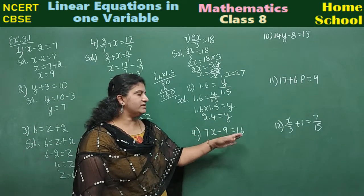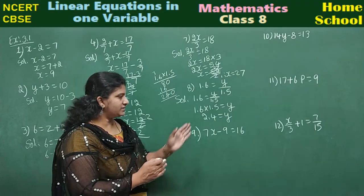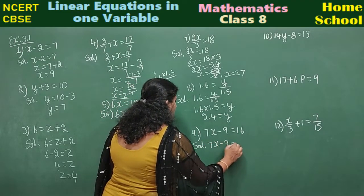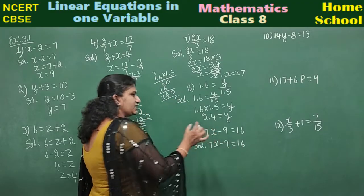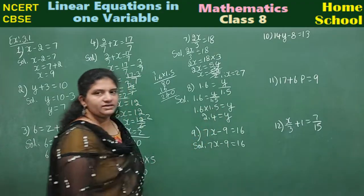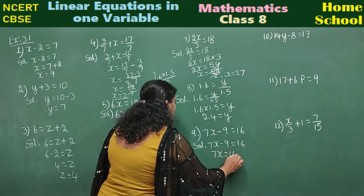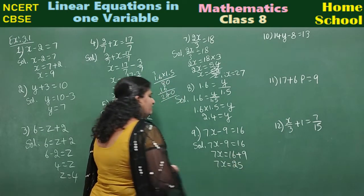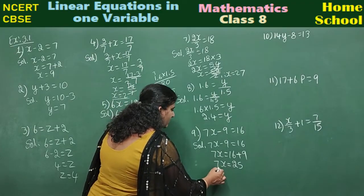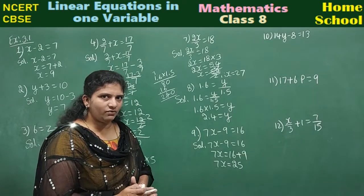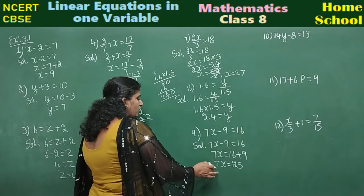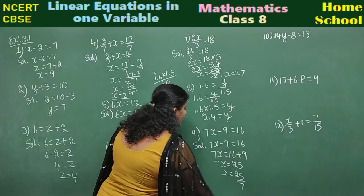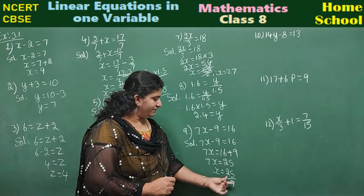Ninth: 7x minus 9 equal to 16. Variable is x. First transpose minus 9 to the other side — it becomes plus 9: 7x equals 16 plus 9, which is 25. Then transpose 7 — it divides: x equals 25/7.